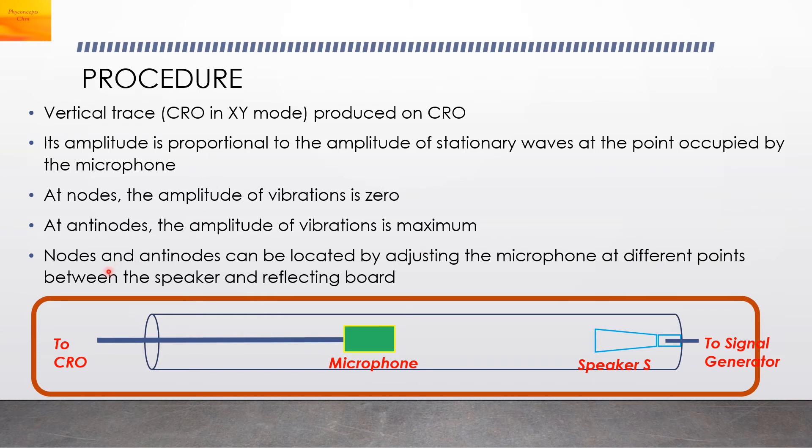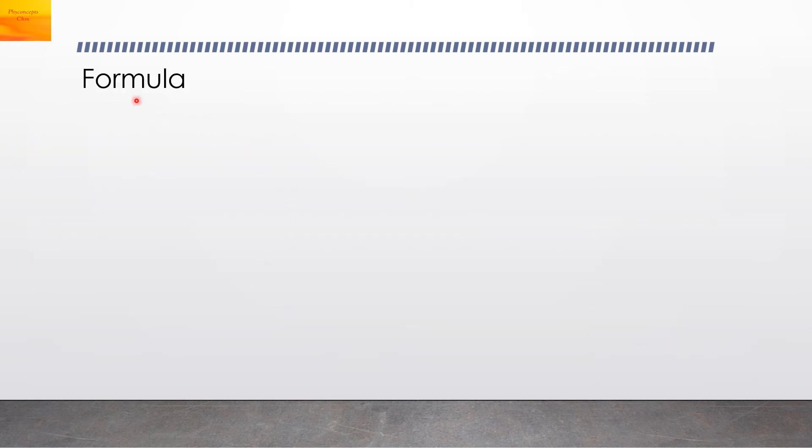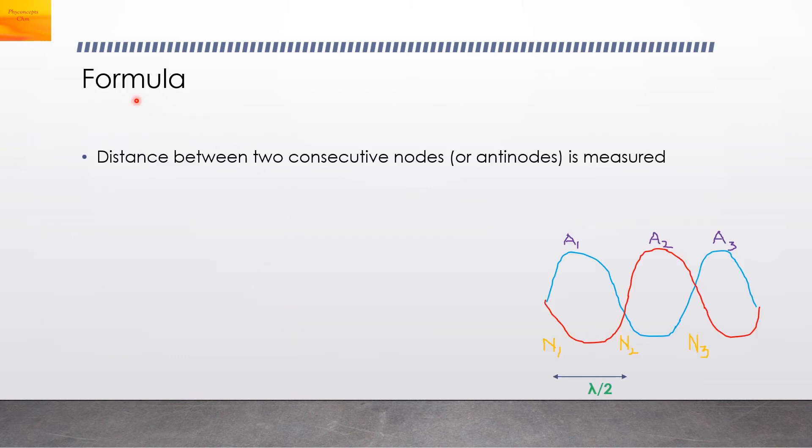The nodes and the anti-nodes can be located by adjusting the microphone at different points between the speaker and the reflecting board. The distance between two consecutive nodes or between two anti-nodes is measured. Normally we measure it between two nodes because that is much easier, as there the amplitude is almost zero. This distance between N1 and N2, these are the nodes.